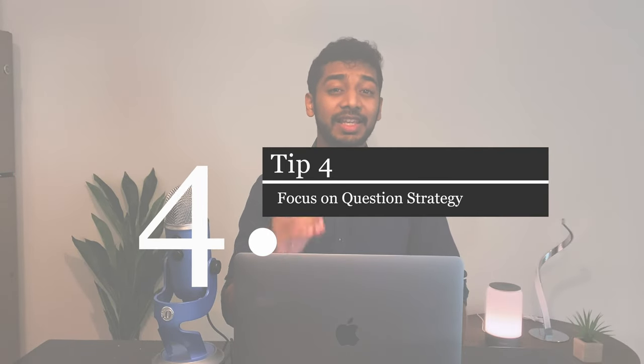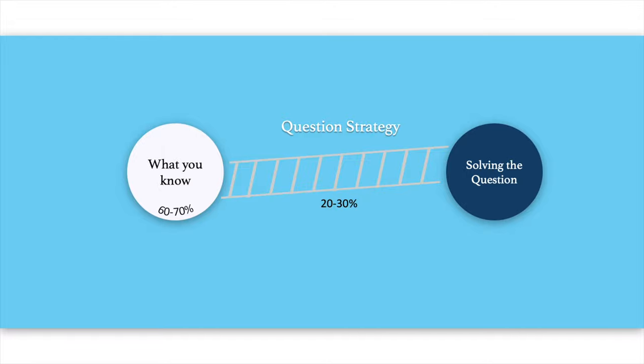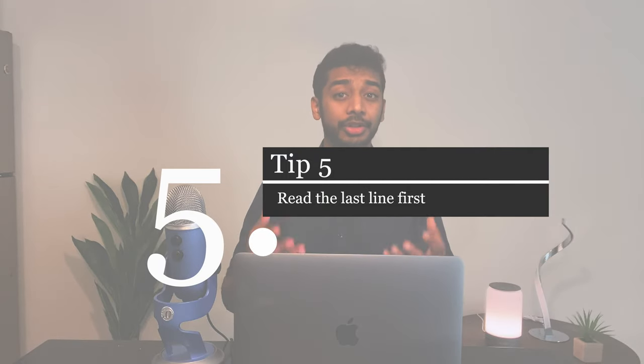Question strategy is key. No matter how much you study when you write your USMLE Step 1, you'll only know 60 to 70% of the knowledge. It's up to you to use question strategy to bridge that 20 to 30% knowledge gap by making educated guesses. First is the way you approach your questions. When approaching the question, try to read the last line first, and then go to the rest of the question.